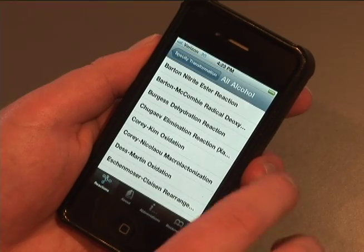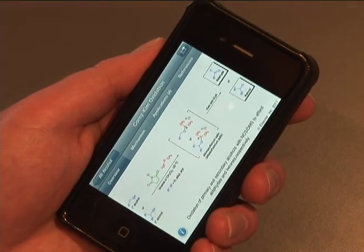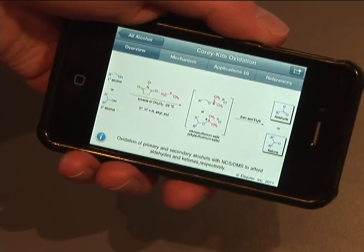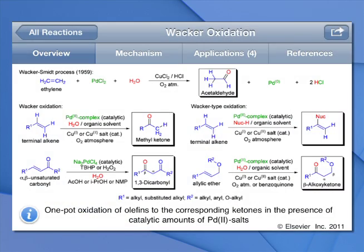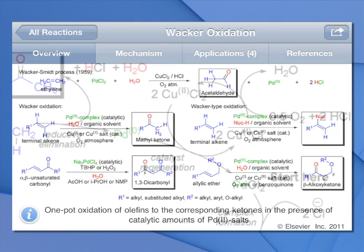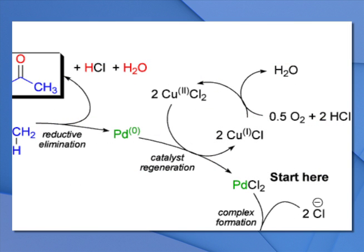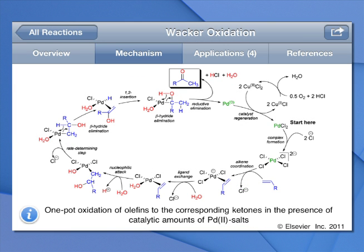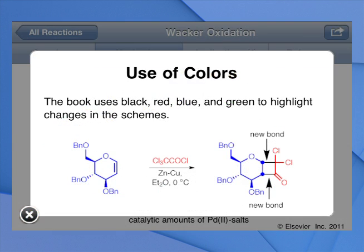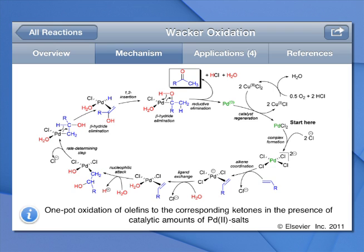Tap on a result to view the reaction. Each reaction screen contains an abundant amount of detail. The overview presents the aim and scope of the reaction. Double tapping enlarges the figures for a clearer view. The mechanism tab reveals how the reaction works, with different colors clearly highlighting separate fragments taking part in the reaction, including where parts of the final molecule originate.